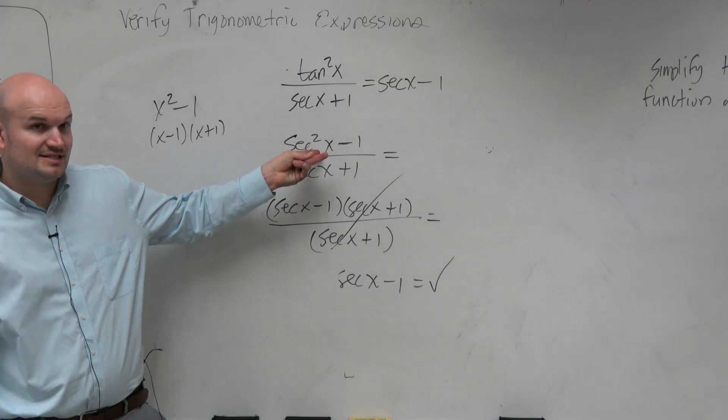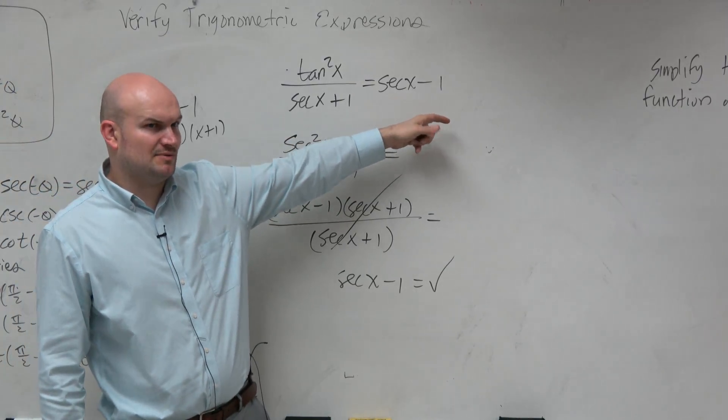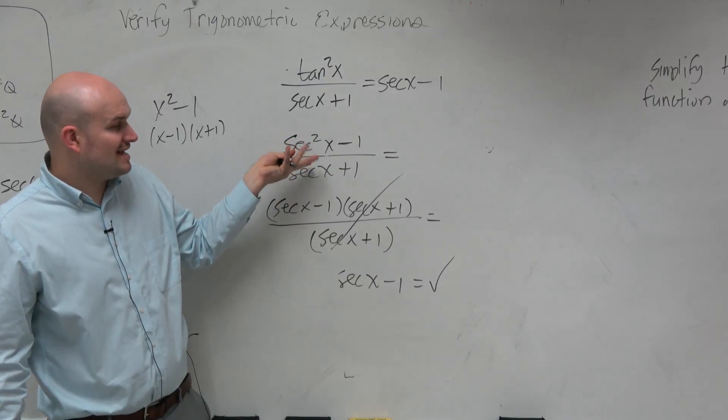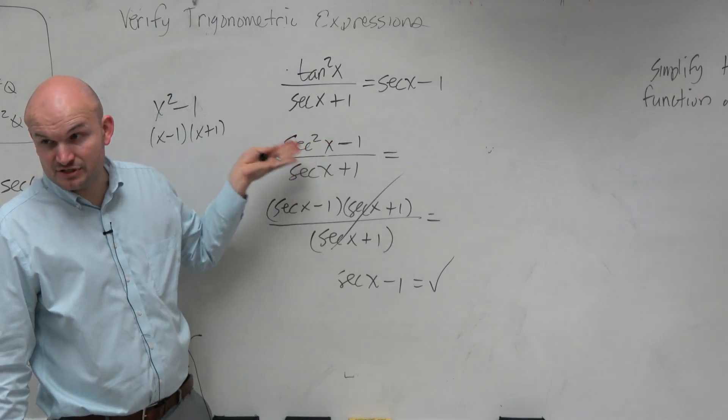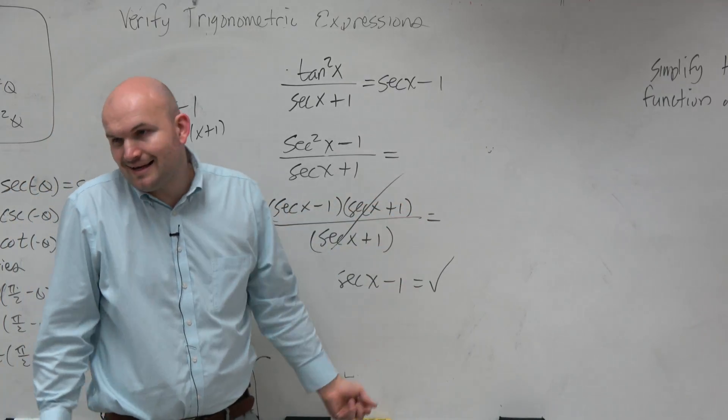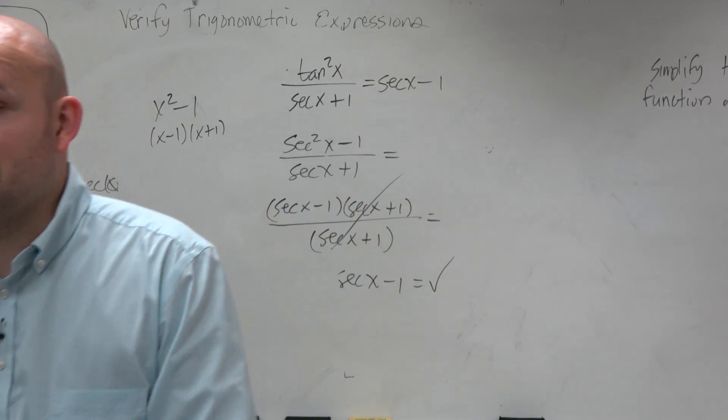So what I did is I saw here, and again, I'm trying to get to secant of x minus 1. So somehow I need to get that expression out of this. Well, I realized I could factor this by using the difference of two squares, and then those would divide out. And again, guys, to be honest with you,